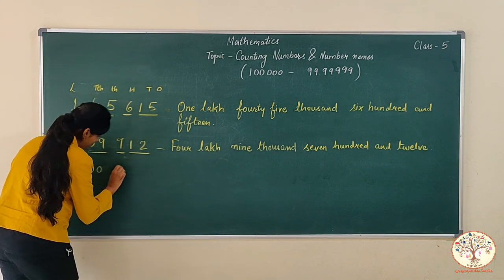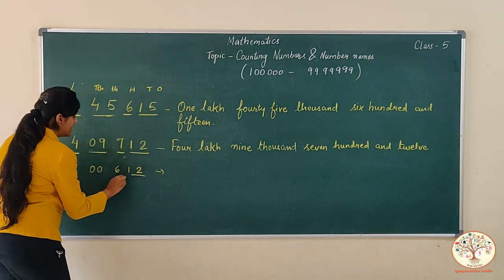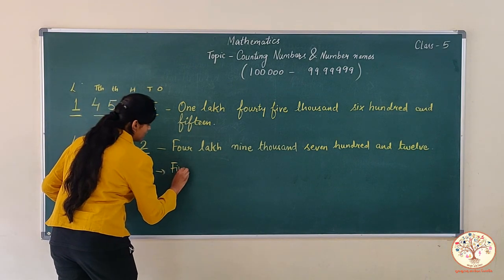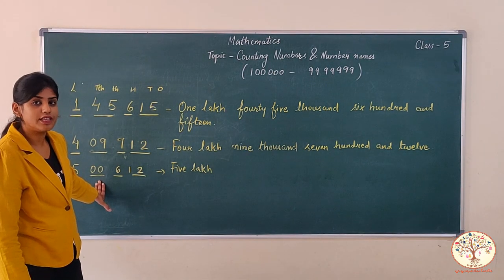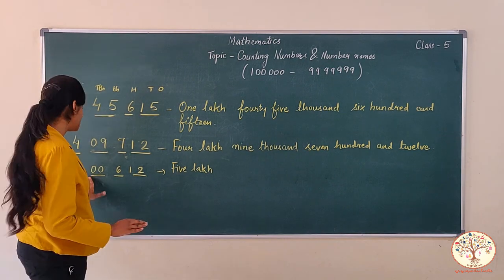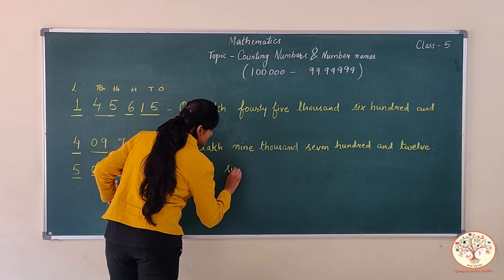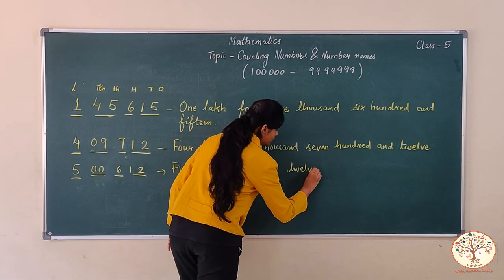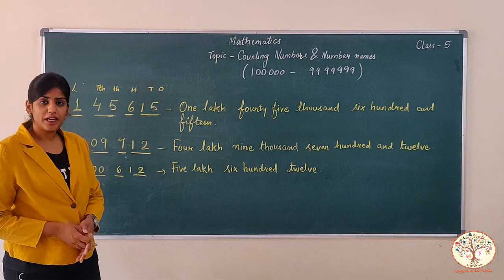Let's take one more example. We divide it into four parts. Five is in the lakhs place, so five lakh. Now there is zero in the thousands place — whenever there is a zero in any place, we skip that number name. So we are not going to write zero thousand; we will skip this and move to the next place value, which is hundreds. Six is in the hundreds place, so we write five lakh six hundred, and one and two together make twelve.